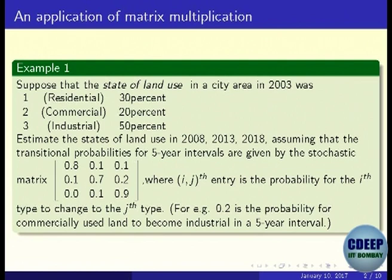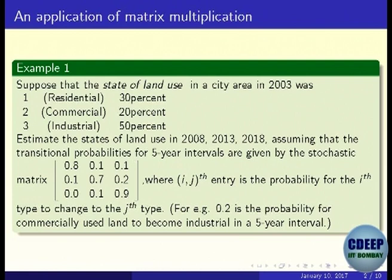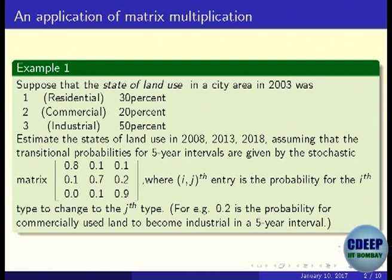It says that after 5 years, there are probabilities given for how an area will change into another kind of use. These probabilities are given in this matrix. For example, the entry 0.2 is the probability of commercially used land becoming industrial after 5 years. The entry 0.0 means that industrial land will never become residential. This kind of probability matrix is called a stochastic matrix.